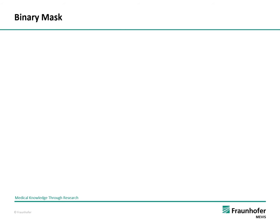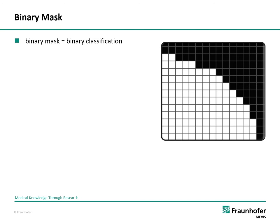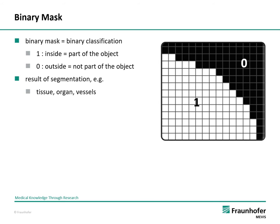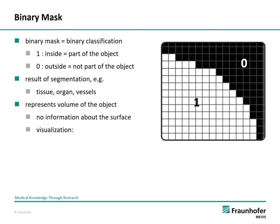What is a binary mask? A binary mask is a binary classification of an image. In this case we have 3D medical images. There are only two possible values: all voxels belonging to the object of interest are labelled with 1, and all other voxels are labelled with 0. A binary mask is the result of segmentation of, for example, tissue, organ, or vessels. It represents the volume of the object, with no information about the exact location of the surface.